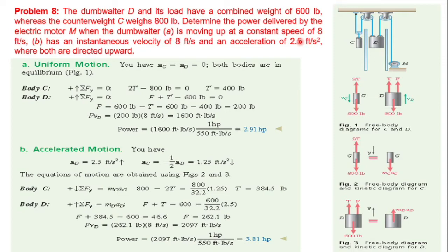We will apply Newton's second law of motion for each condition. Looking at the free body diagram: the motor applies a force F, and the tension in the cable is T. The tension T acts upward on the system, while the weight acts downward. The motor force F and tension T work together to lift the load.